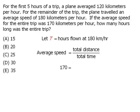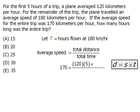To calculate the total distance traveled, we'll use our formula: distance equals speed times time. The distance traveled while traveling at 120 km per hour will be equal to 120 times 5, and the distance traveled while traveling at 180 km per hour will be equal to 180T.